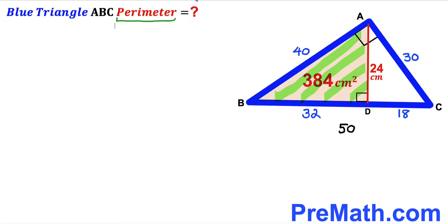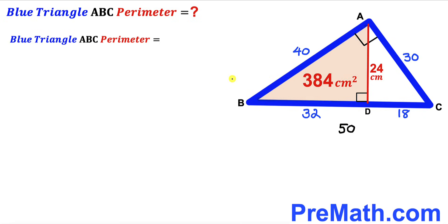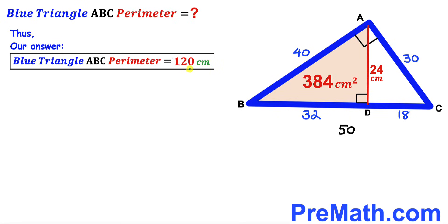Here's our final step: calculating the perimeter of blue triangle ABC. We have all three side lengths — 40, 30, and 50 centimeters. Adding them: 30 + 40 + 50 = 120 centimeters. Therefore the perimeter of this blue triangle ABC is 120 centimeters. That's the final answer. Thanks for watching and please don't forget to subscribe for more exciting videos.